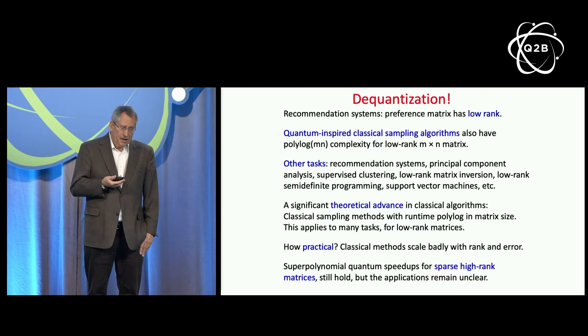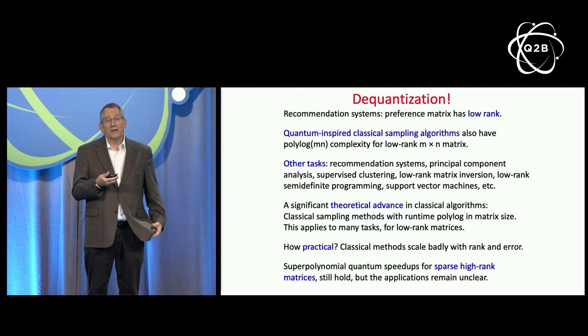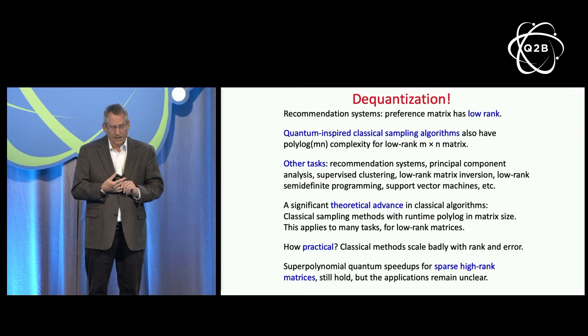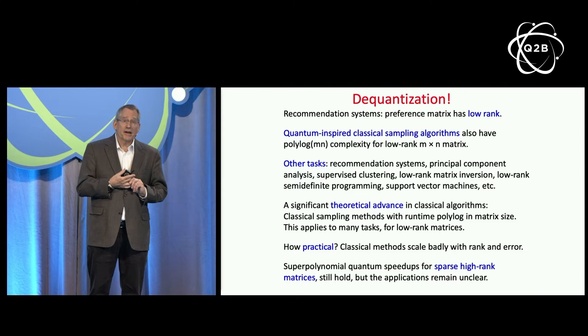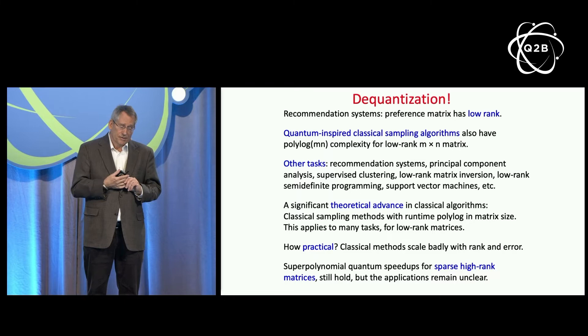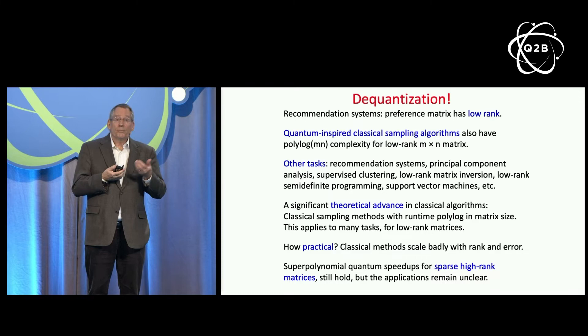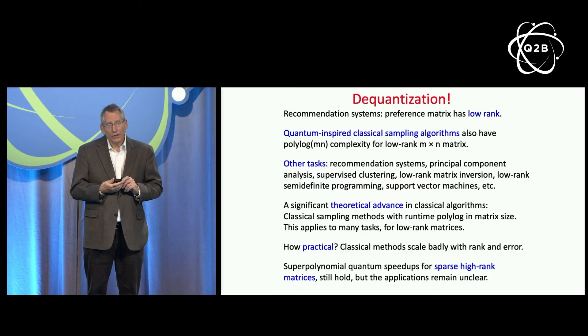These quantum-inspired classical sampling algorithms are a notable theoretical advance. It's remarkable that we can succeed with complexity that is just polylog in the size of a very large matrix in the low-rank regime. The practical impact of these discoveries is still unclear — these classical methods don't scale very well with the rank of the matrix or with the error we're trying to achieve. There's still an advantage, so far as we know, for doing linear algebra with quantum computers not in the low-rank regime, but in the regime of high-rank sparse matrices. The practical implications for real end-to-end applications haven't been worked out satisfactorily, and that's an important thing to address.